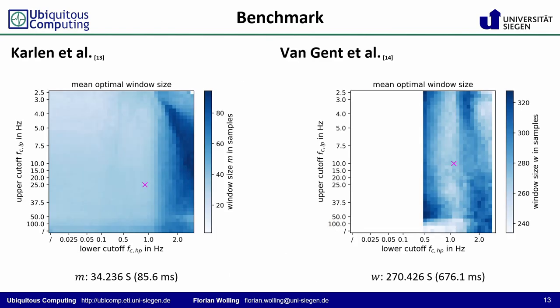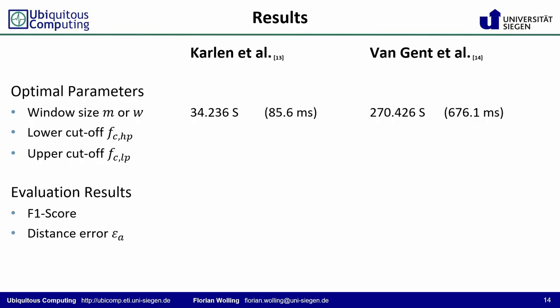For each filter configuration, we furthermore determine the optimal window size. For Carlin's algorithm, the optima are relatively homogeneous and remain constant until the lower cutoff crosses the heart rate. In contrast, the optimal window sizes of von Gendt's algorithm are more heterogeneous and vary widely along the filter configurations. In the optimal configuration, Carlin's algorithm prefers a window size of 34 samples or 86 ms, while von Gendt's algorithm requires a larger window of 270 samples or 676 ms.